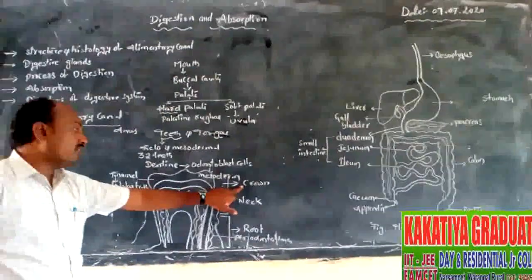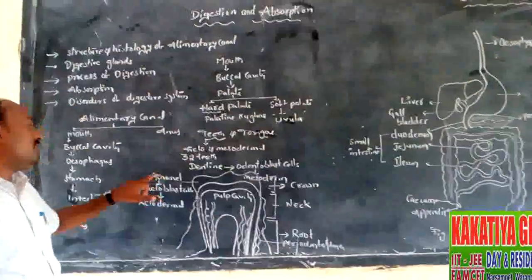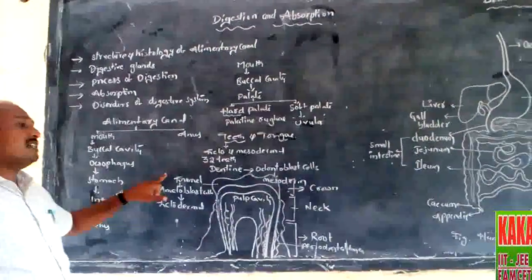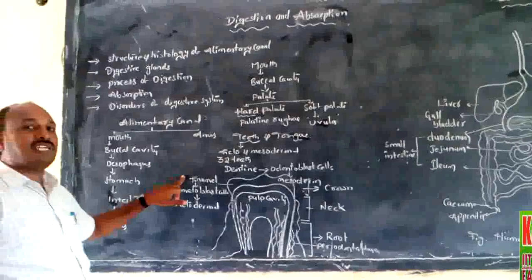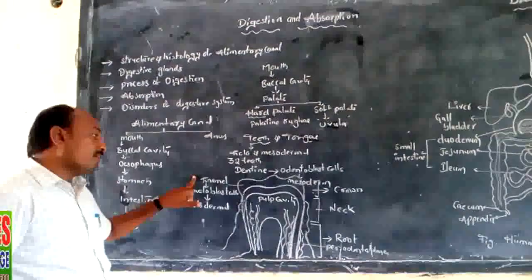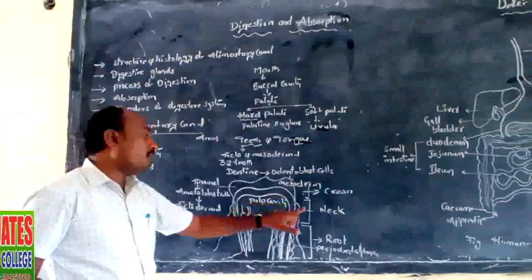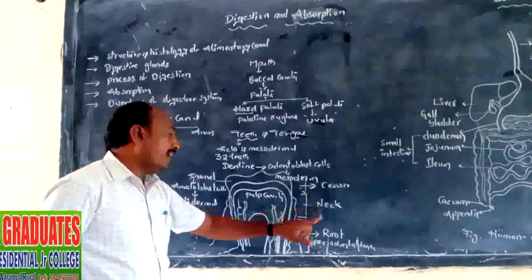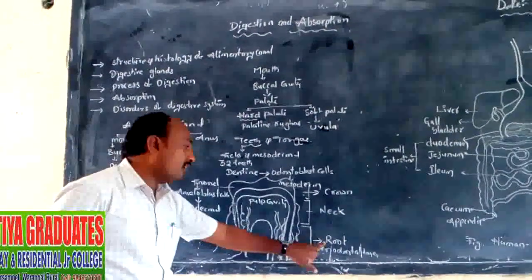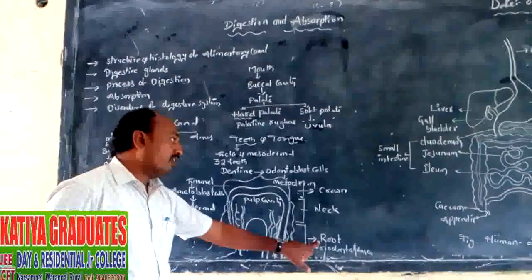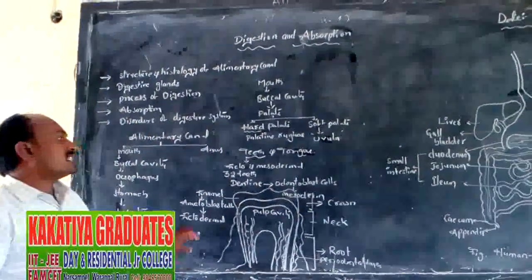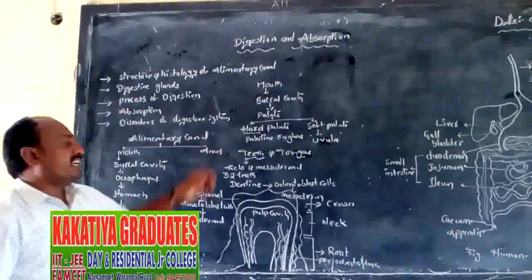The exposed body is called the crown, covered with enamel — the hardest substance of the body. The middle body is called the neck, and the basal body is called the root.